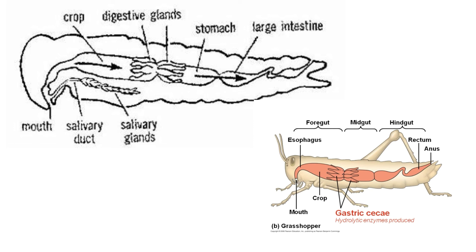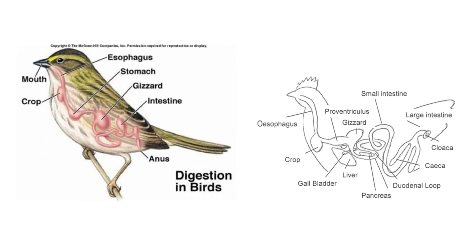The crop is where food is stored temporarily before being ground, in smaller organisms such as the grasshopper, cockroach, and domestic fowl. In domestic fowl, the alimentary canal includes the mouth, esophagus, crop, gizzard, and intestine. The gizzard is where food is ground. Birds do not have teeth because their mouths are covered by a beak. The sand and stones they pick up when feeding serve as teeth, helping them grind food in the gizzard.